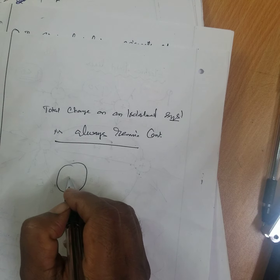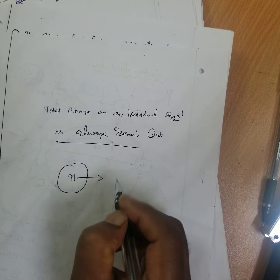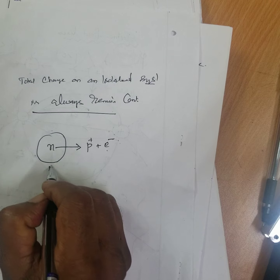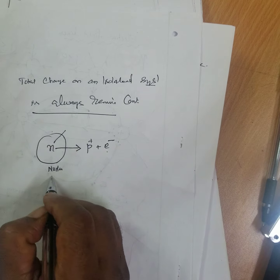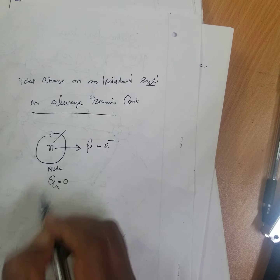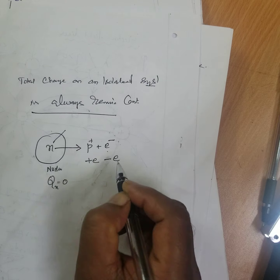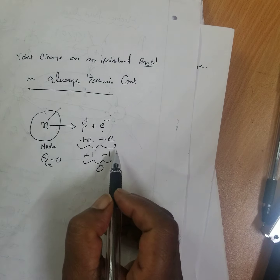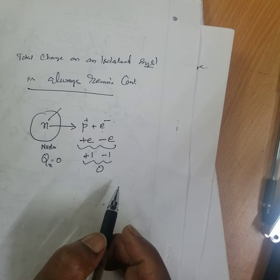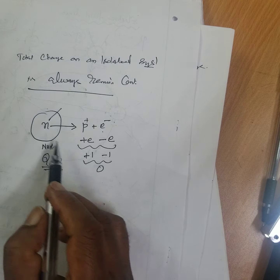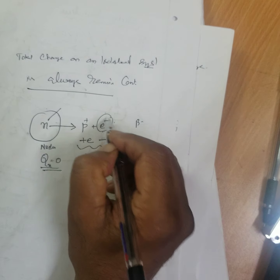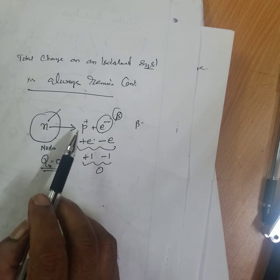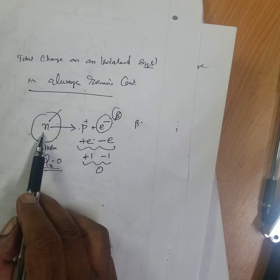For example, inside the nucleus, a neutron disintegrates into a proton and an electron — this is called beta decay, and the electron emitted is the beta particle. The charge of a neutron is zero. A proton has positive charge (+1) and an electron has negative charge (−1); combined they give zero. Therefore the total charge of the system remains constant, which demonstrates conservation of charge.